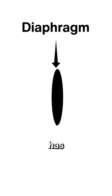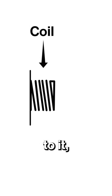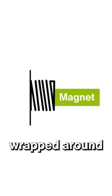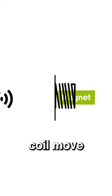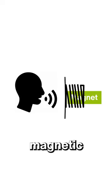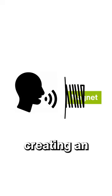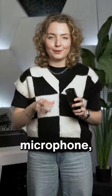A dynamic microphone, or moving coil microphone, has a diaphragm with a coil attached to it, which is wrapped around a magnet. Sound waves make the coil move in the magnet's magnetic field, creating an electrical current.